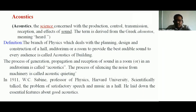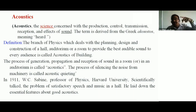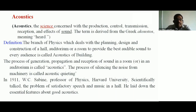In 1911, W.C. Sabine, professor of physics at Harvard University, scientifically addressed the problem of satisfactory speech and music in a hall — not just sound, but speech and music. He gave a perfect treatment of speech and music in a hall and laid down the essential features about good acoustics. In 1911, W.C. Sabine gave his theory — the Sabine theory — and gave the reverberation time. He explained reverberation, found out some problems, solved them, and gave one speech about the problems of construction of buildings, laying down the essential features about good acoustics.